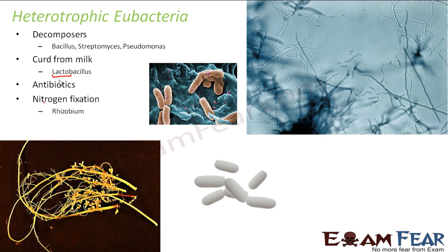First of all, we know that nitrogen is very much beneficial to plants — it helps in their growth and is one of the macronutrients for plants. These kind of heterotrophic bacteria are present in legume plants. When I say legume plants, I am talking about plants like peas and soya beans. In the roots of these plants are present these kind of symbiotic bacteria.